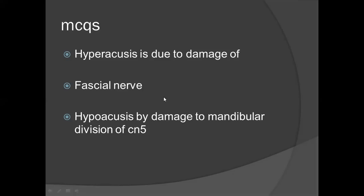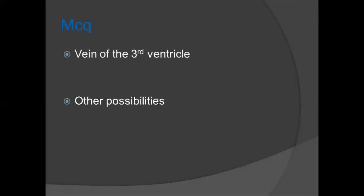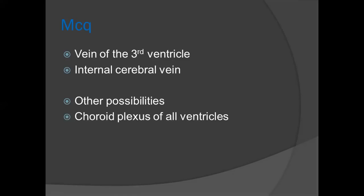An important MCQ is Crocodile Tear Syndrome, which is proximal to the geniculate ganglion — I think it was damaged. Crocodile Tear Syndrome MCQs have come in the first prof, so these clinical MCQs are very high yield. Also, the vein of the third ventricle was asked — the answer is the internal cerebral vein. Another possibility is that the Choroid Plexus of any ventricle can be asked, so you should know those as well.